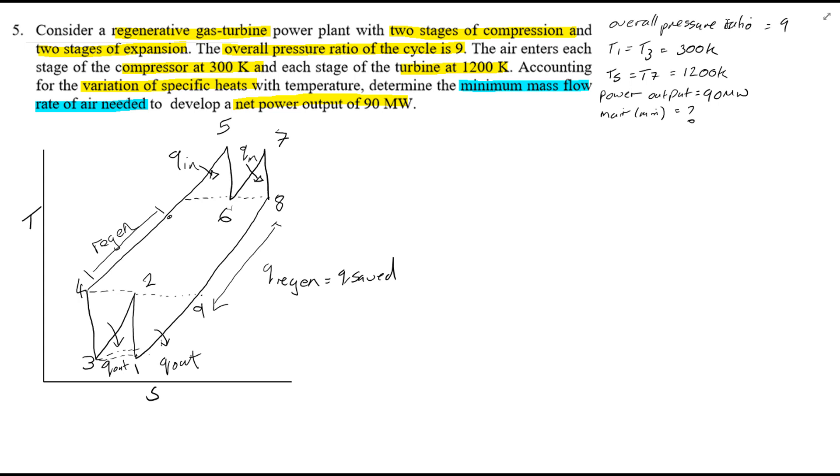Overall pressure ratio of 9. Air enters each stage of the compression at 300K, so the points T1 and T3 are equal to 300K.